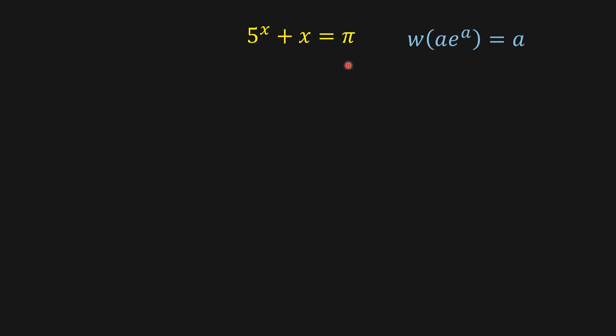So the Lambert W function says that W of A times e to the A is equal to A. We're going to work on some transformations to arrive at something similar to this.